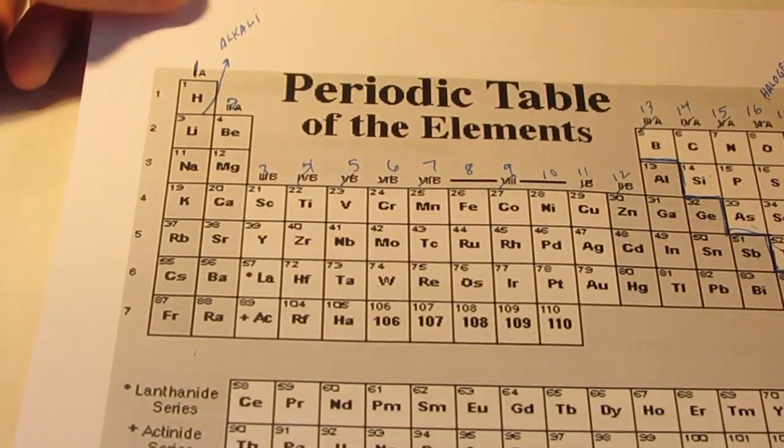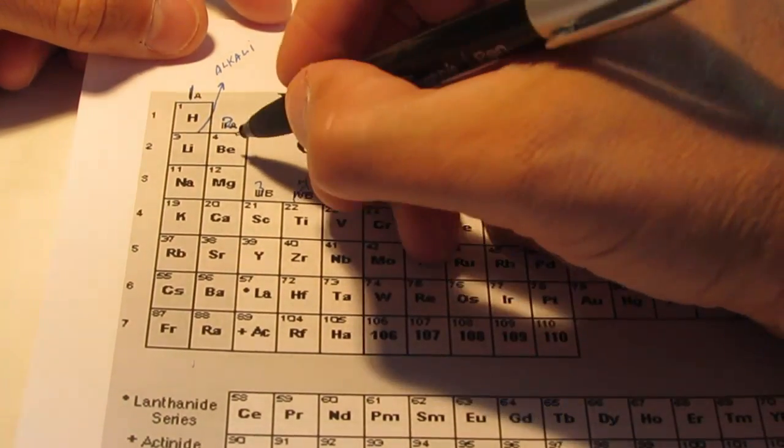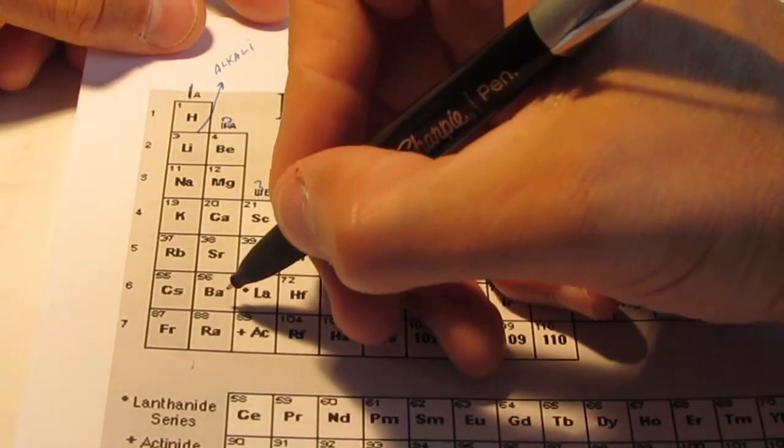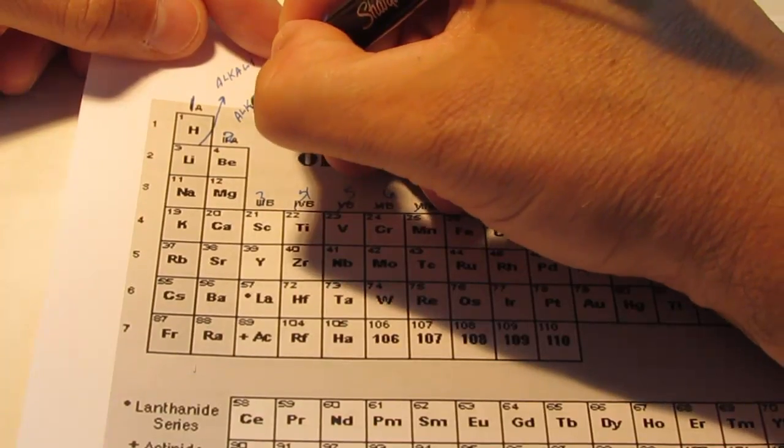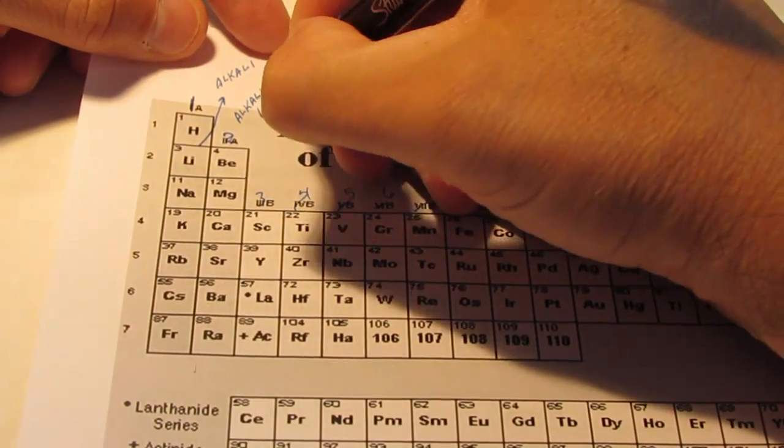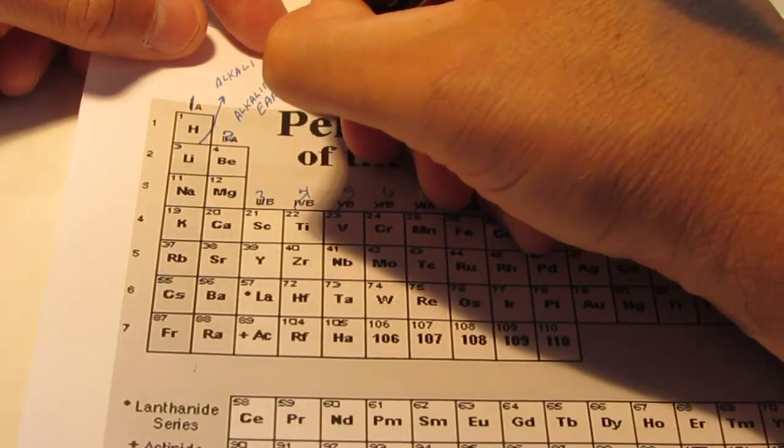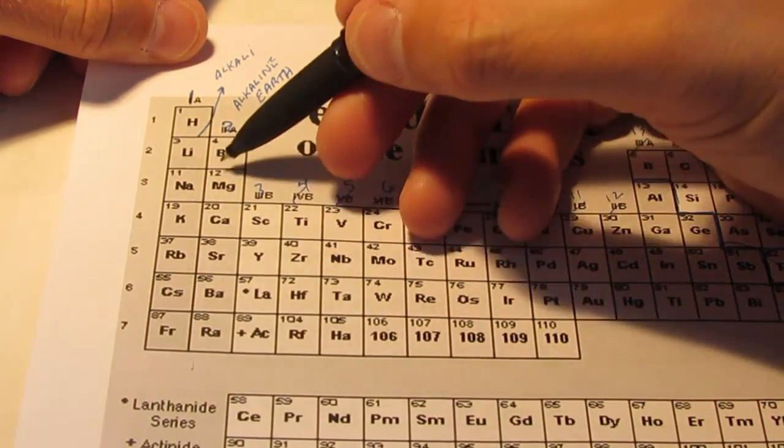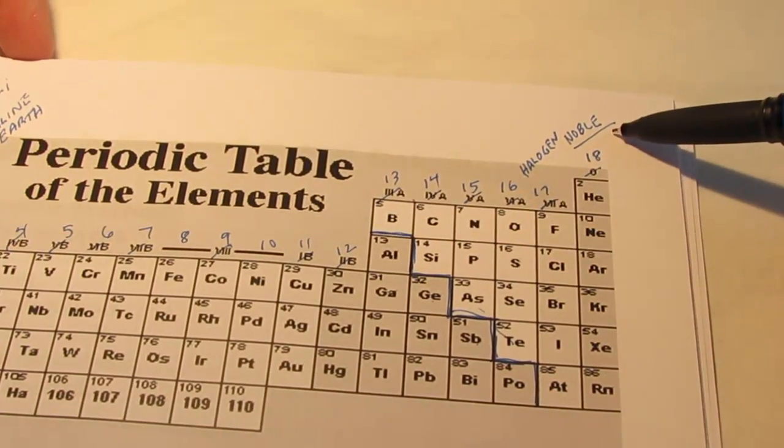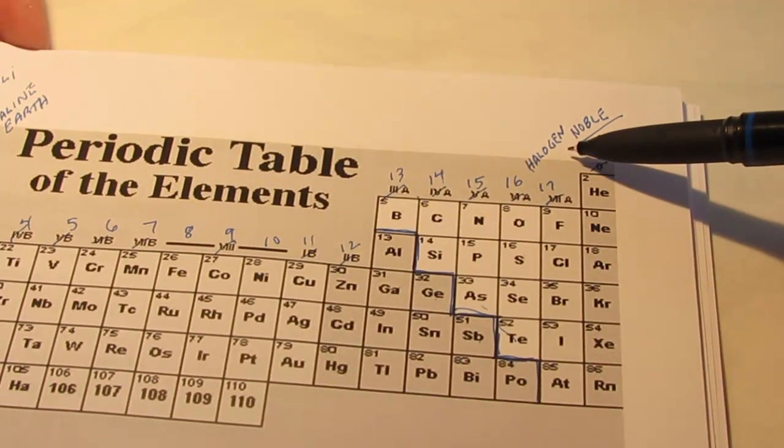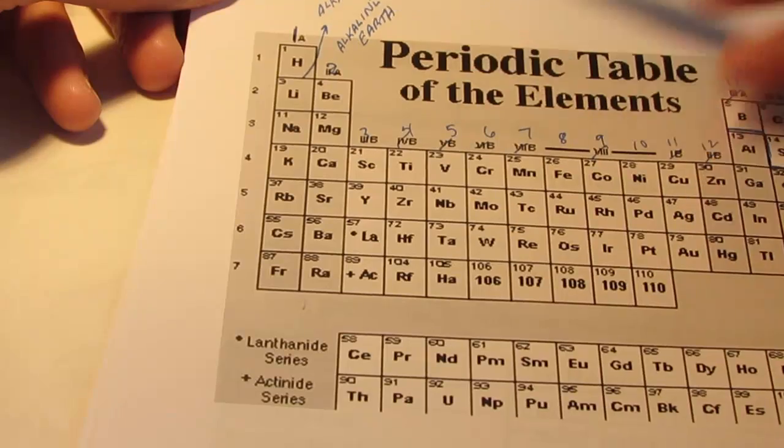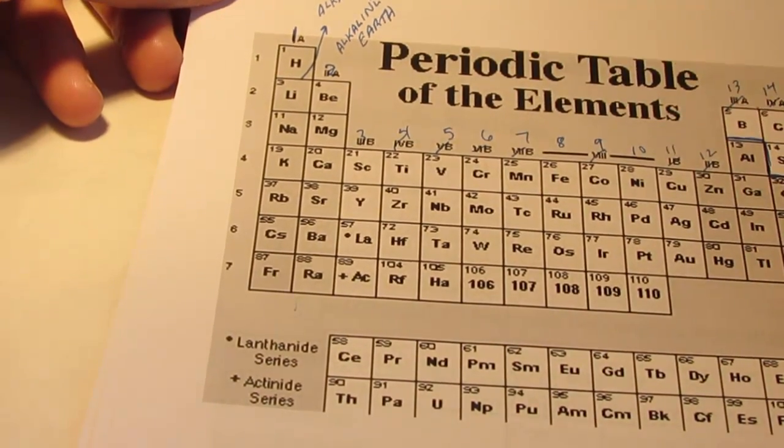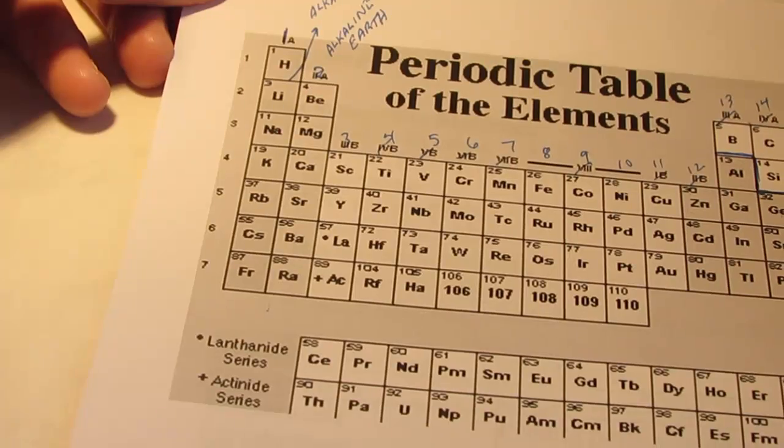And the last group that has a nickname is group 2. It consists of beryllium, magnesium, calcium, strontium, barium, and radium. These guys are called the alkaline earth metals. So, we have group 18, they're known as the noble gases. Group 17 are known as the halogens. Group 1 metals are known as the alkali metals. And group 2, they are known as the alkaline earth metals.